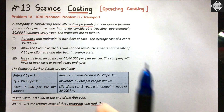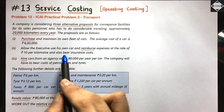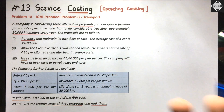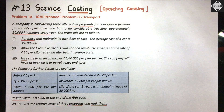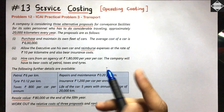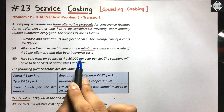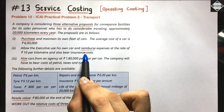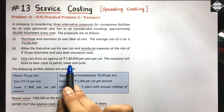Under the reimbursement option, the employee uses his own car and pays for petrol, repairs, maintenance, and tires himself. The company reimburses him for that. Additionally, the company bears the insurance cost as well — that is the only extra item the company pays under this second option.